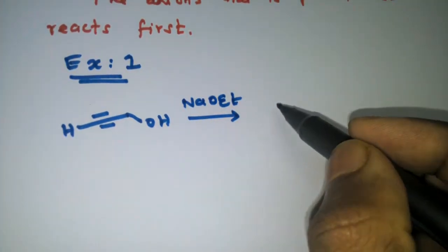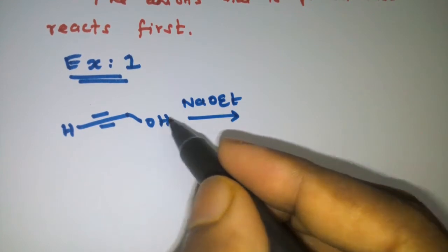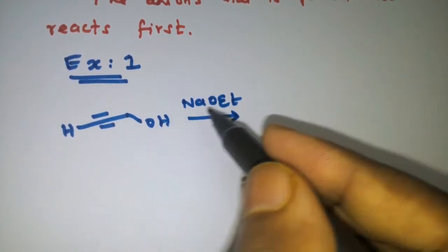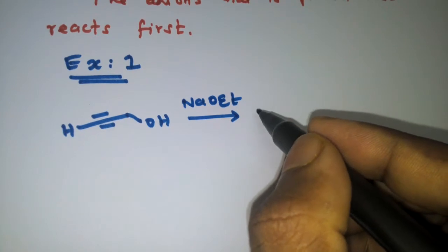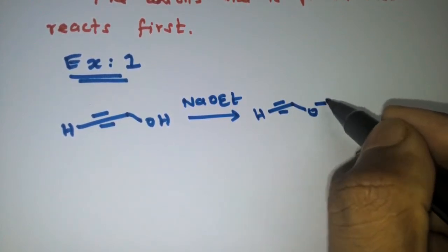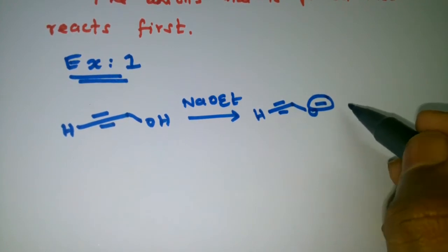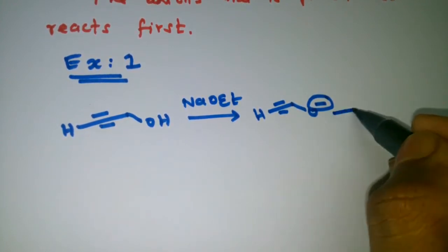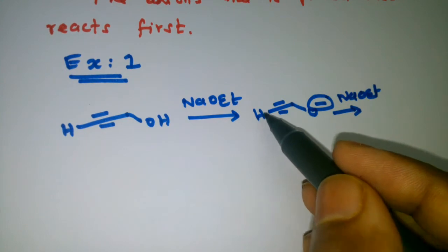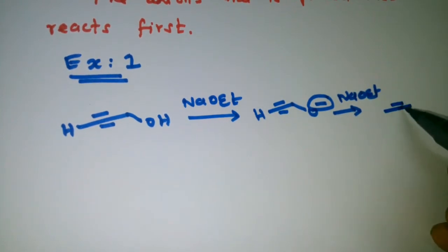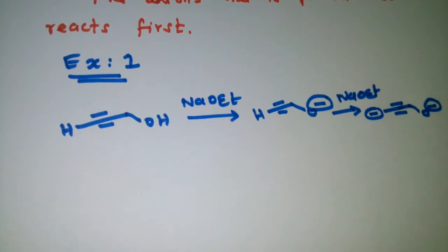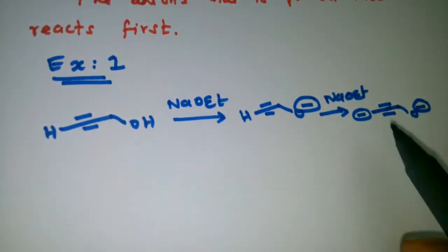With one molecule of base, the O-H proton will be removed. So we get O-minus. Then with one more equivalent of base, the alkyne terminal proton will also be removed, forming a di-anion.